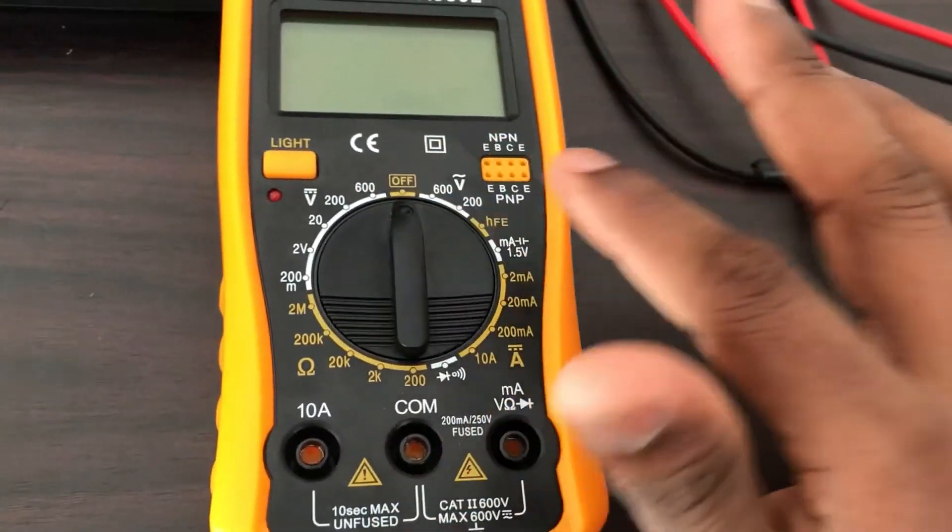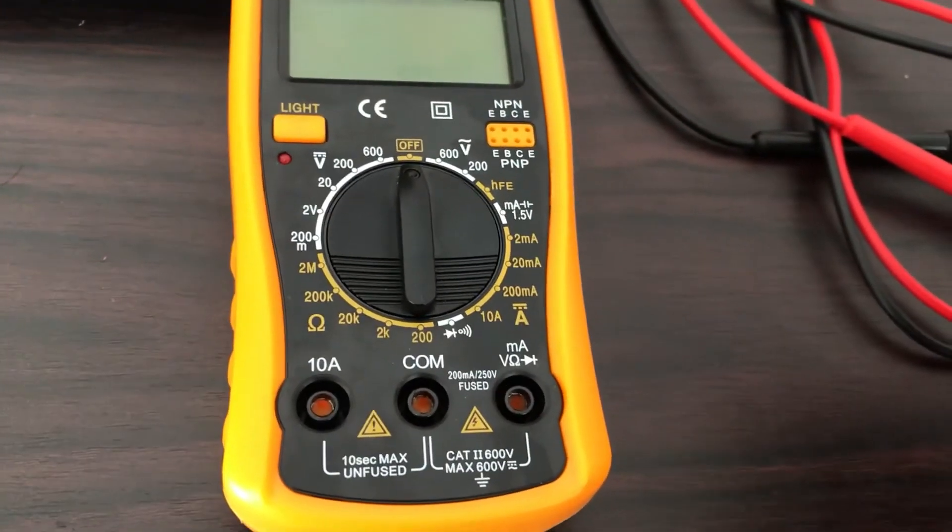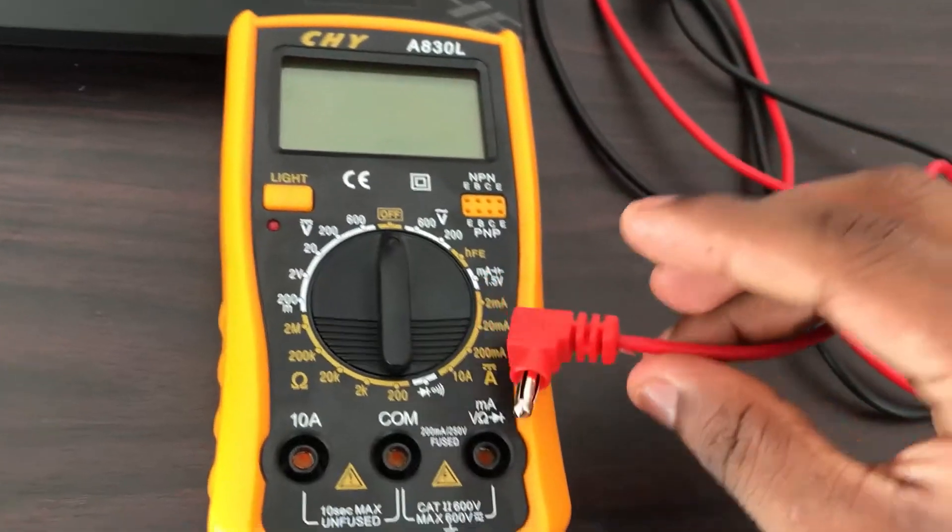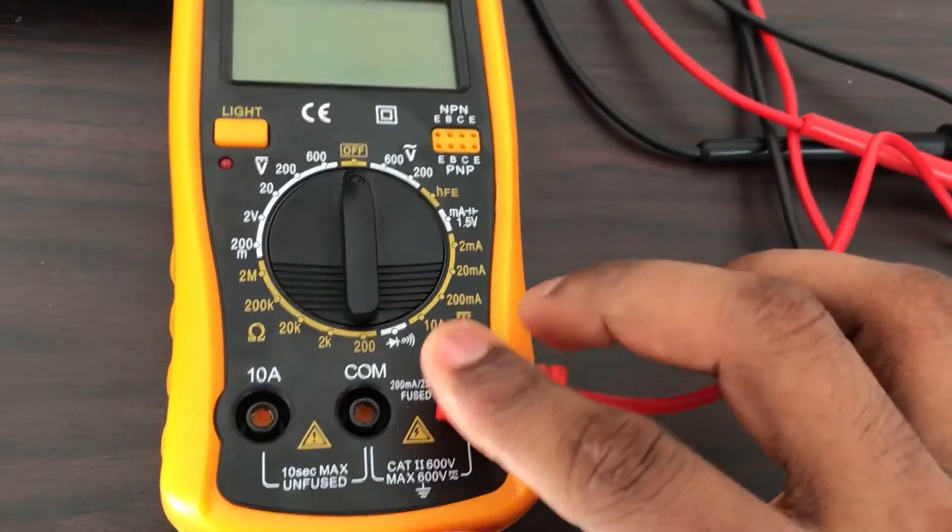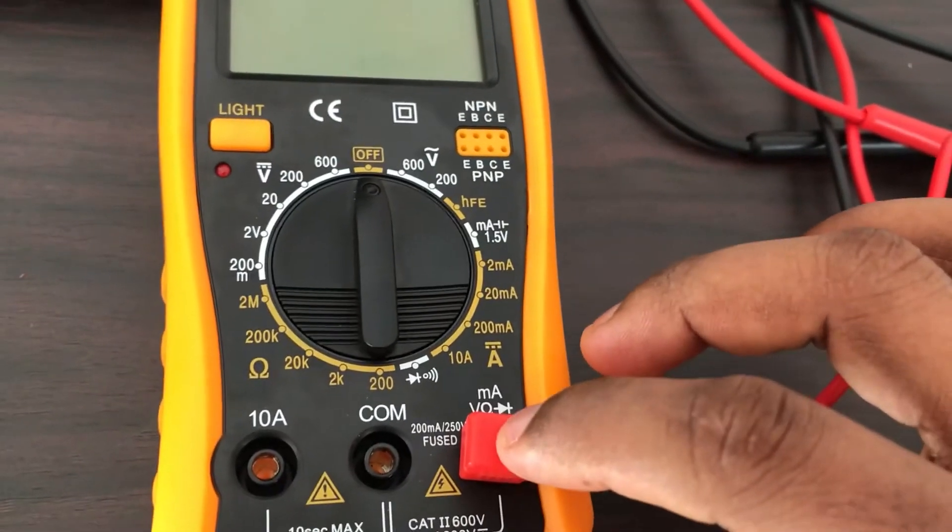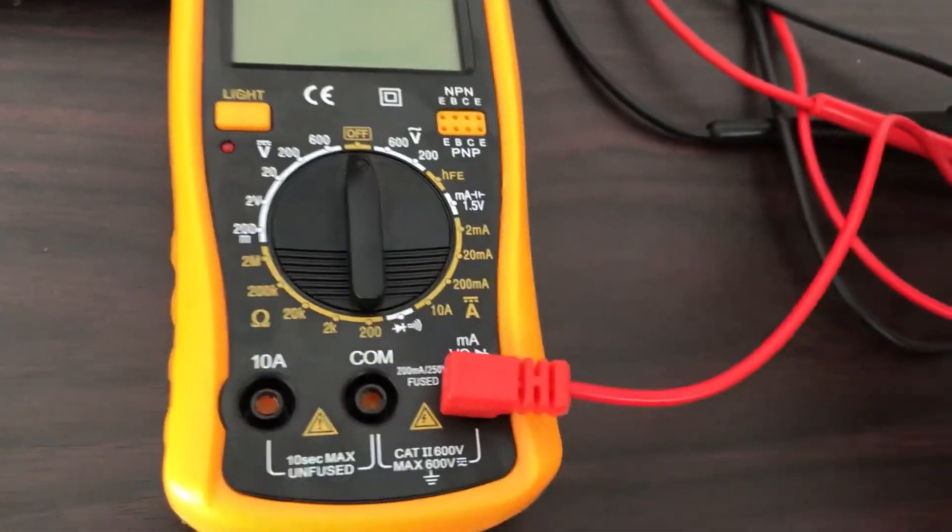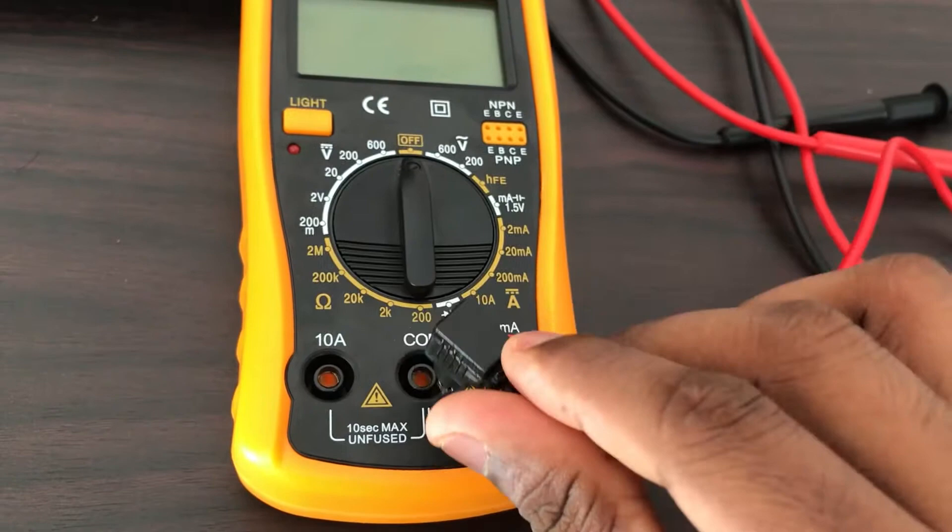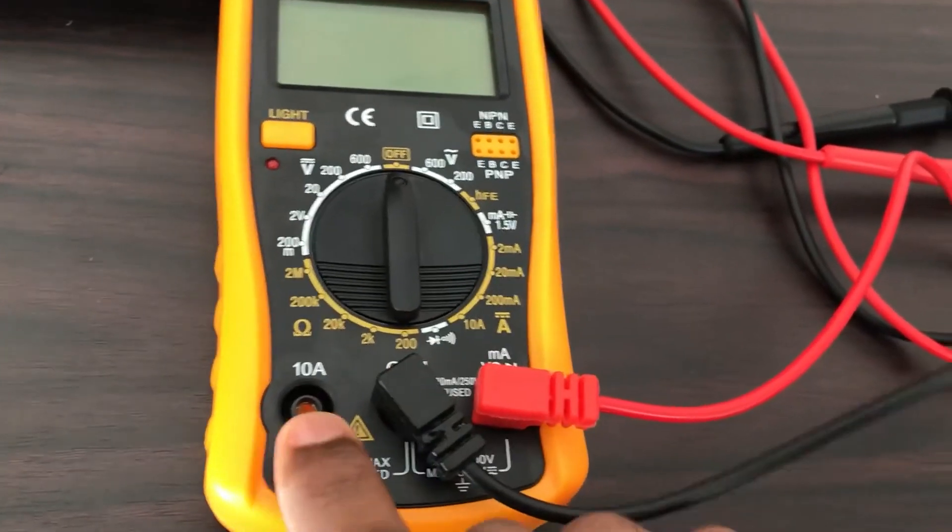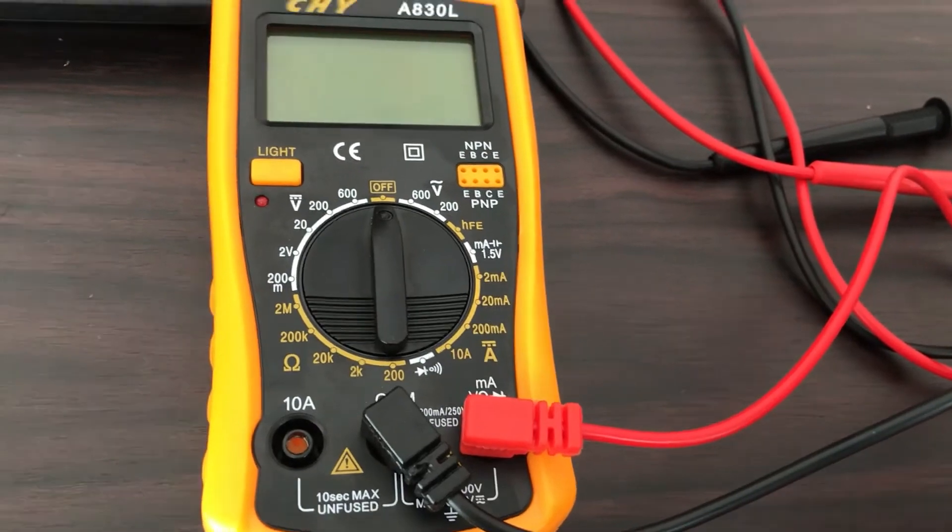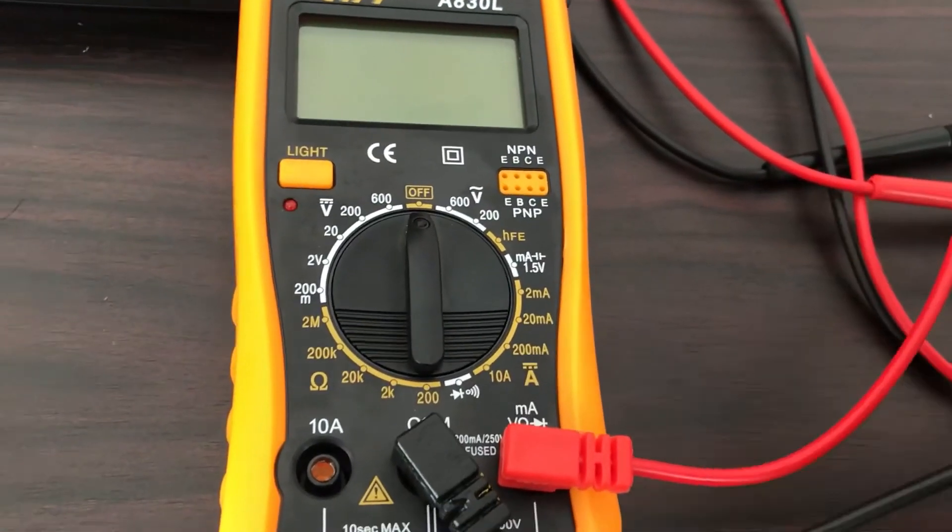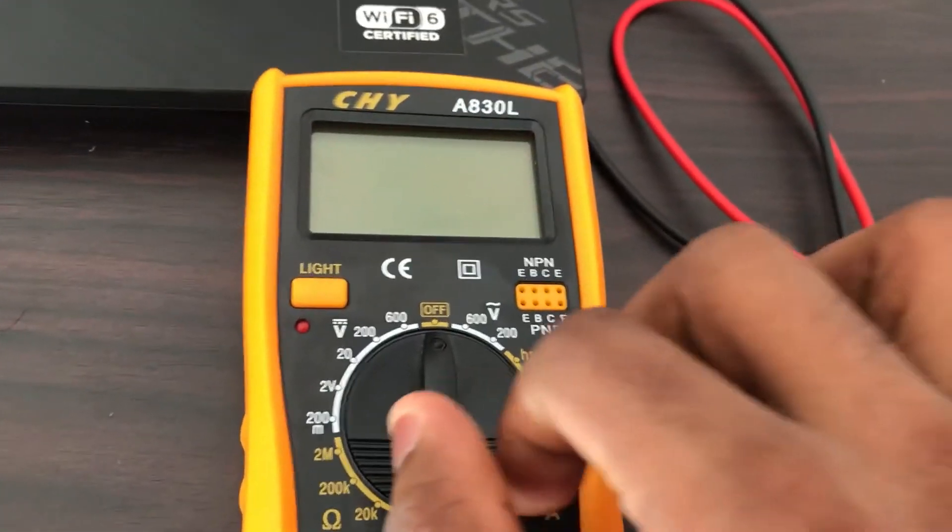To start off, you need to plug these conductors to this multimeter. For basic measurements, we plug in the red to this port where you see voltage, ohms, and milliamperes, and the black one to the common port. We will not be using this 10 ampere port much, and I'd like to make a separate video to discuss measuring high currents.